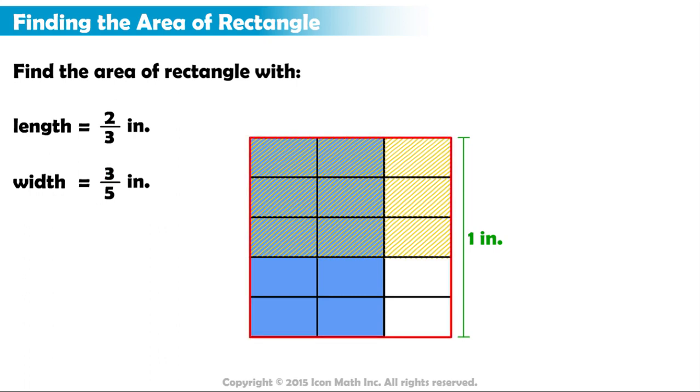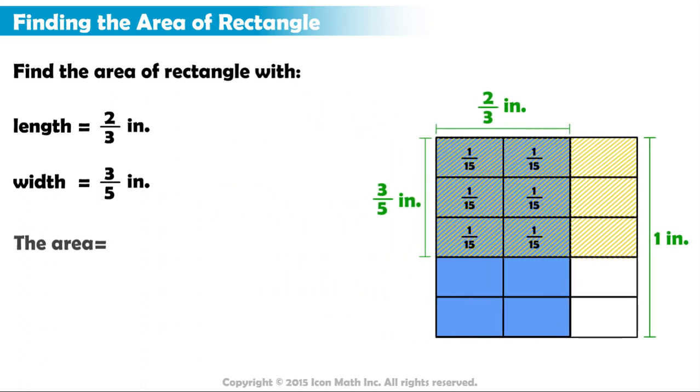Notice how the area of the 1 inch unit square is divided into 15 equal parts, where each part is 1 fifteenth of the total area, or 1 fifteenth square inches. The area where both the blue and yellow shading overlap represents a rectangle with a length of 2 thirds inches and a width of 3 fifths inches. How much does this overlap area represent of the total? Notice that this area consists of 6 small rectangles, each measuring 1 fifteenth square inches. So, the area of our rectangle is 6 fifteenths square inches.